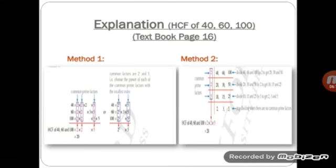According to method two, the given three numbers are divided by common prime factors and division is continued until there is no more common factor. The division is stopped here, common factors are taken out, and their product is equal to 20. So the answer is the same as in method one.